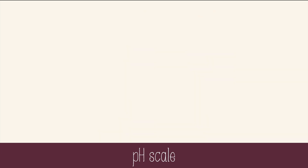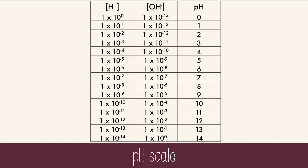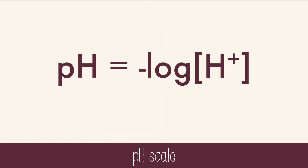If you look at the exponent on the hydrogen ion concentration, you'll notice that the numbers go from 0 to negative 14. The scientist Sorensen knew that if you take the log of an exponent, you get the exponent. But he also liked the look of positive numbers, so he came up with this formula: pH is equal to the negative log of the concentration of hydrogen ion.